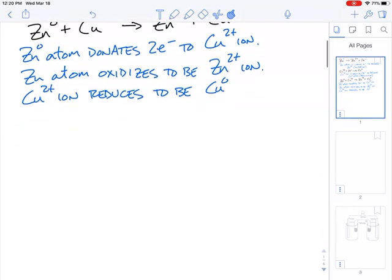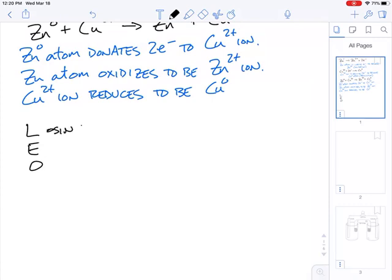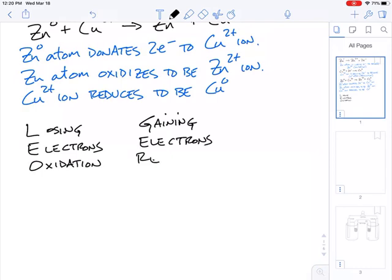Some other terminology that we can introduce you to helps us remember all these different terms and what they mean. This part is a little review: Leo goes ger. So we have Leo, losing electrons is oxidation. And gaining electrons is reduction. Typically we say Leo goes ger because Leo the lion is going to roar, is going to make that sound, and it helps us remember it.